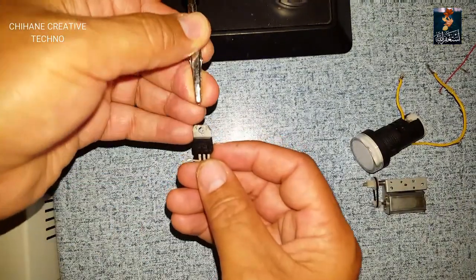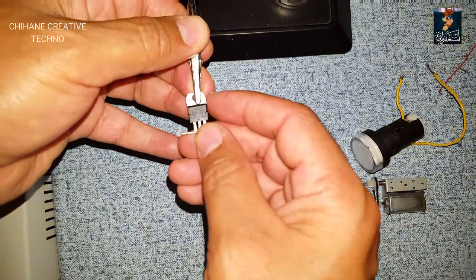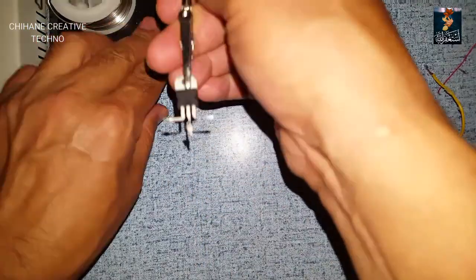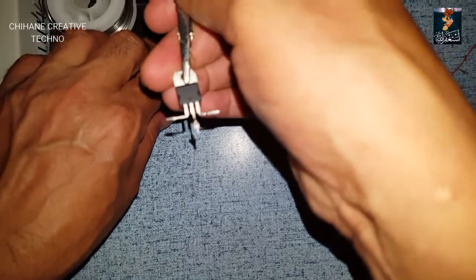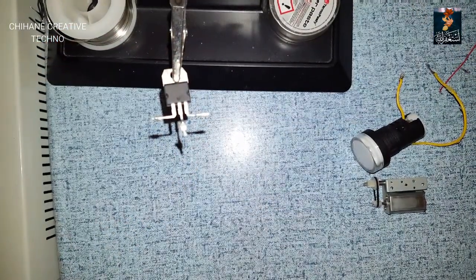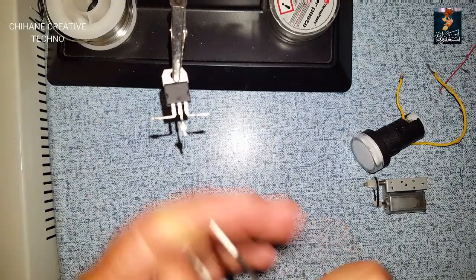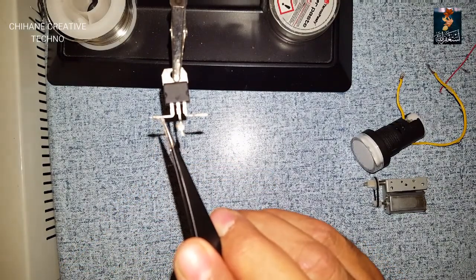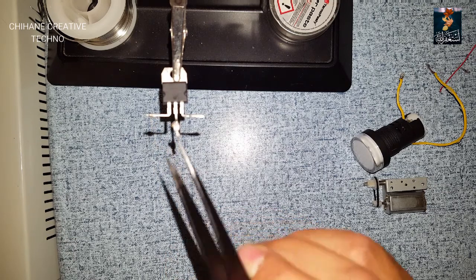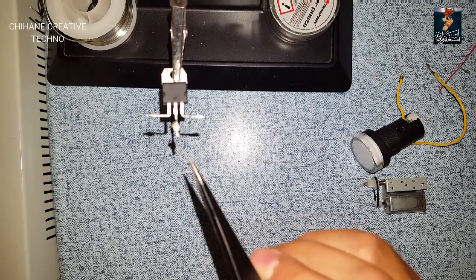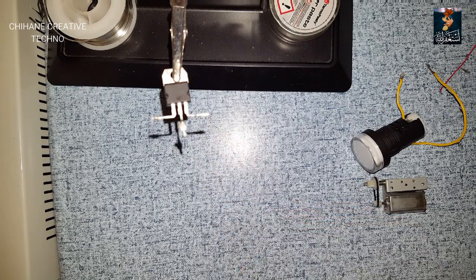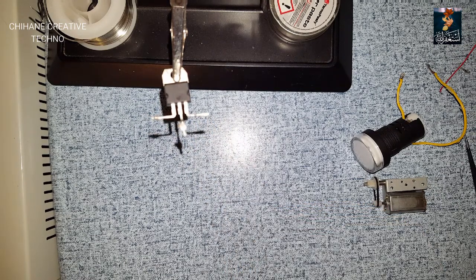So here we've got our transistor. Here I'm going to put the input—12 volts positive—and here the shared negative, the ground, and here the output, the positive output.